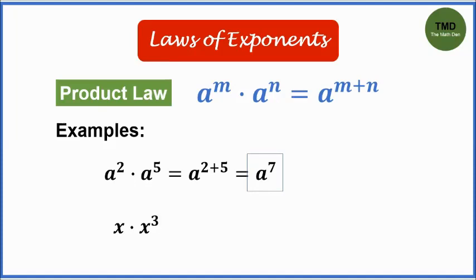Example number 2: x times x cubed is equal to x raised to 4. The common base x is copied, then the exponents are added. 1 plus 3 is 4.